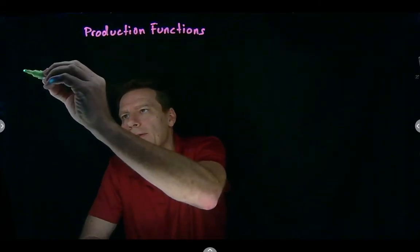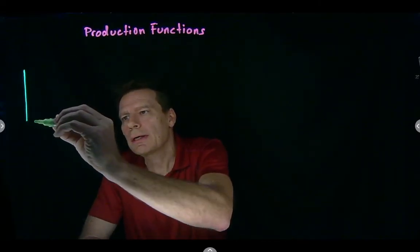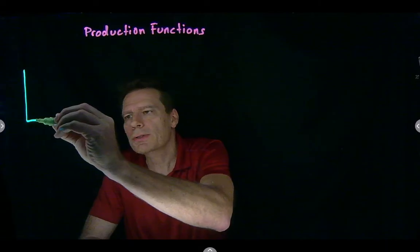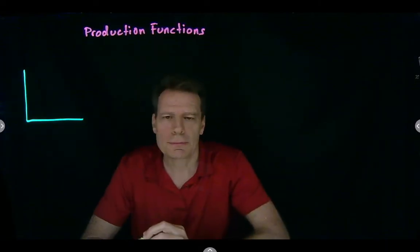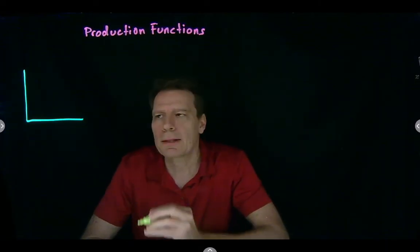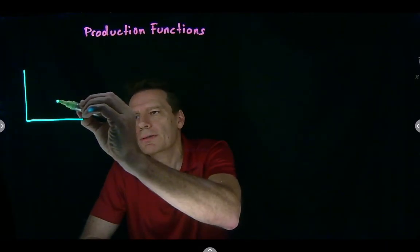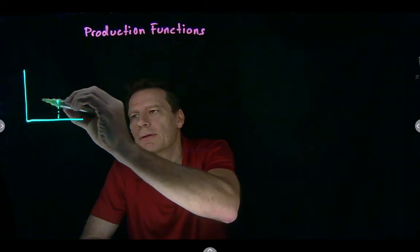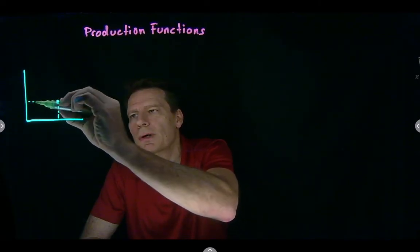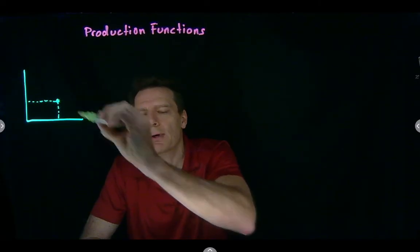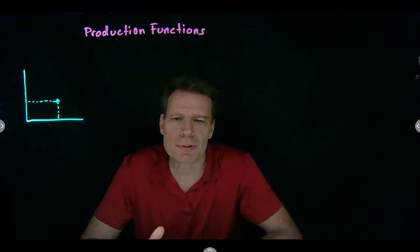When we first introduced the consumer model, we began with the idea of a consumption bundle. We used the vertical axis to measure the x2 good and the horizontal axis to measure the x1 good. Every point in this space represents a different combination of x1 and x2, so every point represents a different consumption bundle.